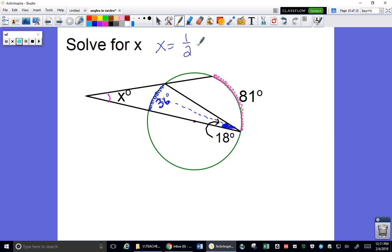So x is half of 81 minus 36, which is half of 45, half of 45 is 22.5 degrees. So the exterior angle for this problem is going to be 22.5 degrees. Hopefully you have some more understanding of how interior and exterior angles work with circles.